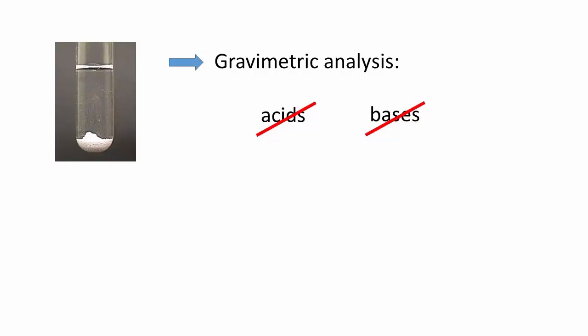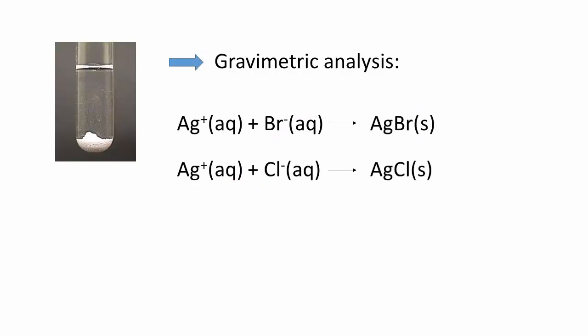As we can see in the solubility rules, nothing forms a precipitate with a sodium cation, and therefore a gravimetric analysis will not work for sodium. However, with a silver cation, we know that anions such as chloride or bromide will form a stable solid that will fall out of the solution as a precipitate.